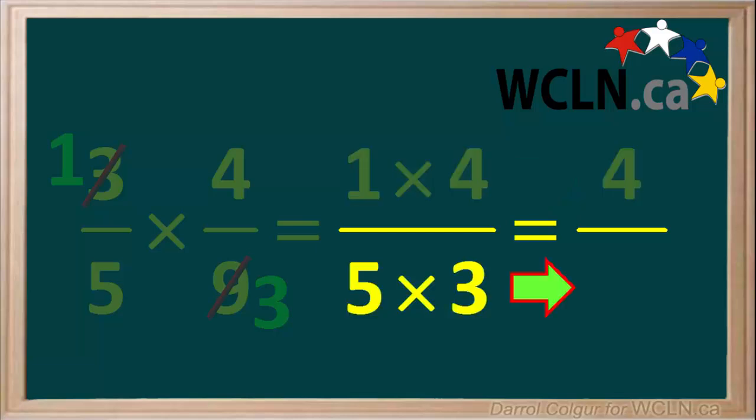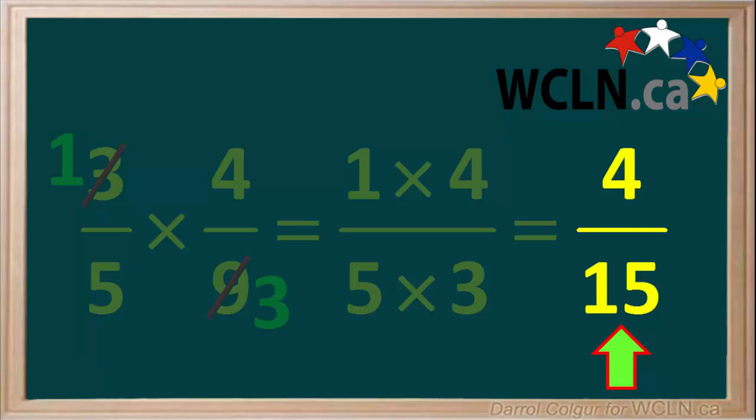And in the denominator, we have 5 times 3, which is equal to 15. So the final answer to this multiplication of fractions is the fraction 4 fifteenths.